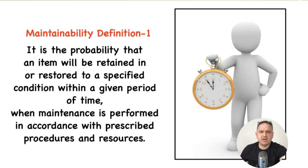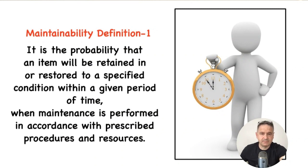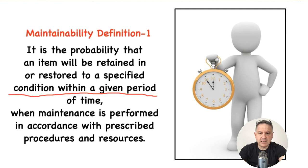The first perspective is about maintenance times. In all three definitions, we assume that we follow the maintenance procedures as defined. The maintainability definition based on maintenance times says: it is a probability that an item will be retained or restored to a specific condition within a given period of time. This is the first definition of maintainability.